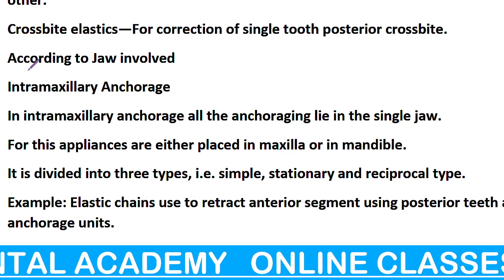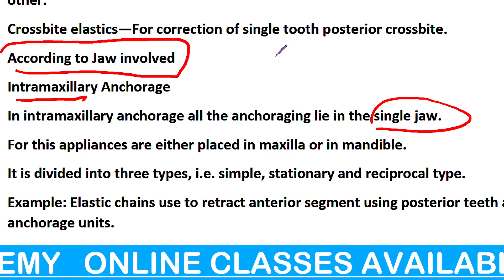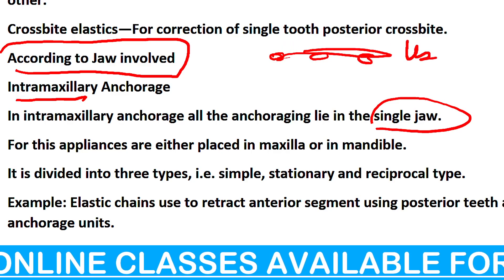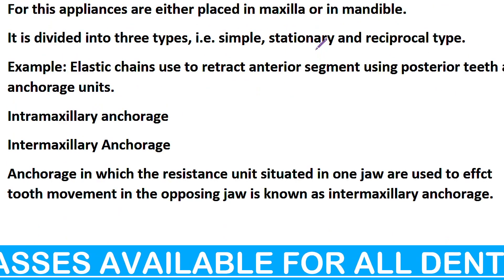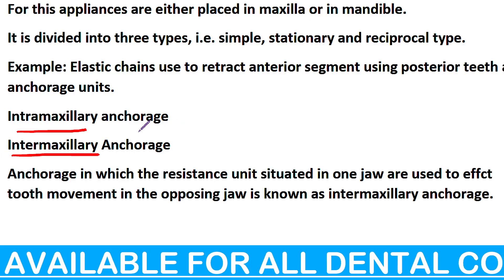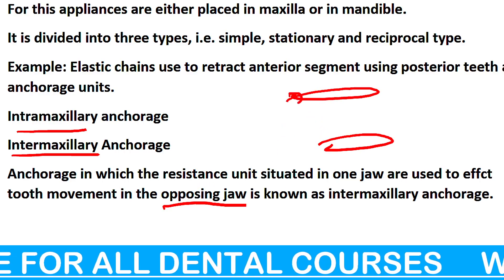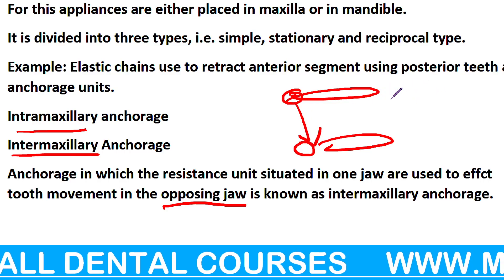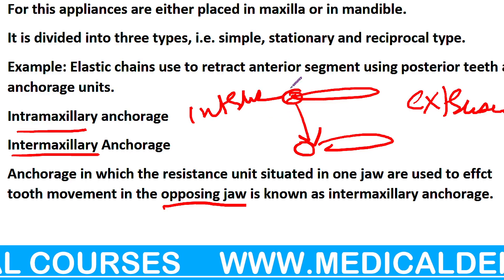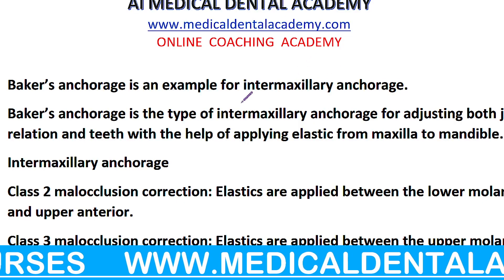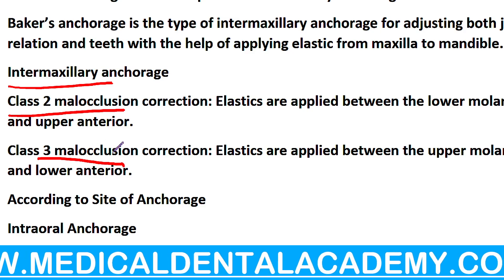Third classification: According to the site — Intramaxillary मतलब एक ही jaw में है — upper teeth में ही या lower में — लेकिन एक ही जगह पर किया है। फिर आता है Intermaxillary — मतलब एक दूसरे jaw के साथ connect करेंगे — upper jaw और lower jaw। Tooth को बाहर लाना हो, tooth को अंदर ले जाना हो — तब यह movement हम दे सकते हैं। Intermaxillary कब दे सकते हैं? Class 2 occlusion और Class 3 में।